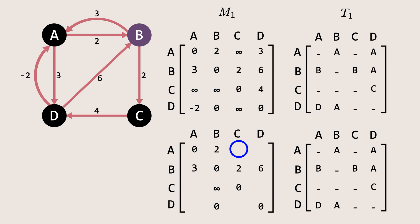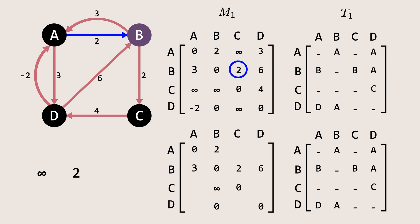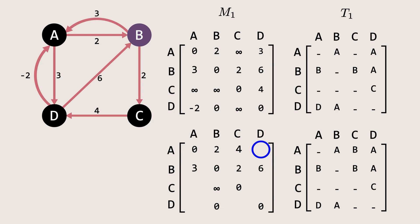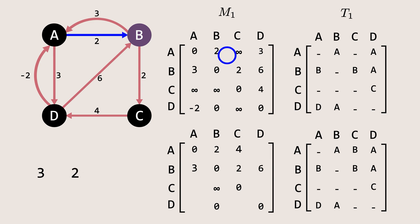Now let's see the path between A and C. Currently, the cost to reach there is infinity, meaning no path is known. But if we look via B, going from A to B has a path with a cost of 2, and going from B to C also has a path that costs 2, giving a total of 4. Since 4 is less than infinity, we will update it to 4 and set the previous node to B, as the path is coming via B. Next is the path between A and D. Currently, the shortest cost is 3, but if we check via B, the cost from A to B is 2, and the cost from B to D is 6. This gives a total of 8, which is more than the current cost of 3, so we will not update this one.